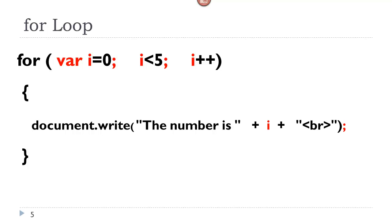Is i less than five? Yes, it is. Now let us execute the code in the curly braces — we are going to put a statement on the web page. The statement will read 'the number is zero'. Second time around, now i has incremented. So technically it is incrementing when we start again. Now i is one. Is i less than five? Yes, it is. So we are going to execute the statement — the statement will say 'the number is one'.